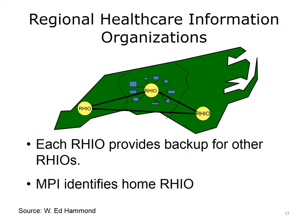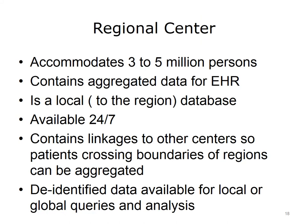The RHIOs would be operated by trusted, reliable organizations. In summary, a regional center would accommodate 3 to 5 million persons, contain aggregated data for an essential EHR, be local to the region database, be available 24/7, contain linkages to other centers so patients crossing regional boundaries can be aggregated, and have de-identified data available for local or global queries and analysis.